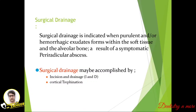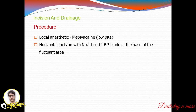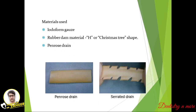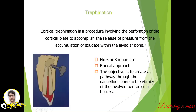We can either perform incision and drainage or cortical trefination. For incision and drainage, we give local anesthesia and a horizontal incision with a number 11 or 12 blade at the base of the fluctuant area to remove the pus. Commonly used drains include iodoform gauze, rubber dam material, and Penrose drain.